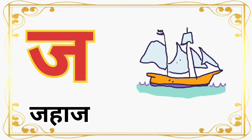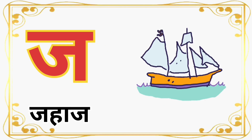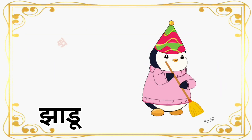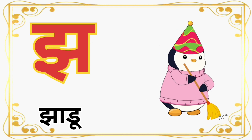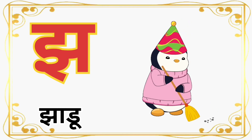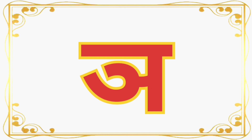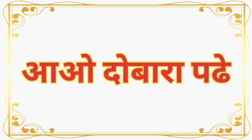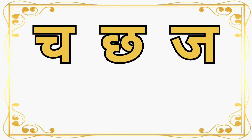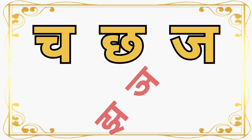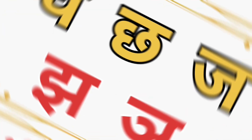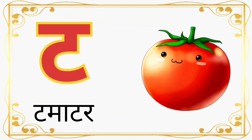ज से जहाज़ (Ja for ship). आओ दुबारा पढ़ें: चा, छा, जा, झा। ट से टमाटर (Ta for tomato).